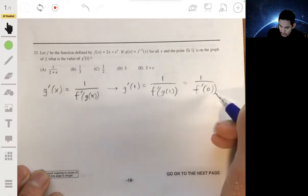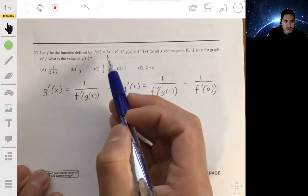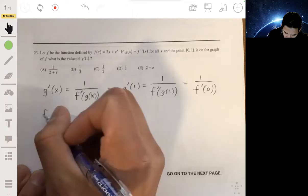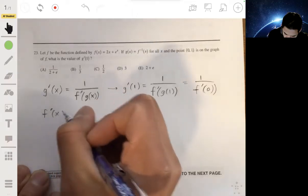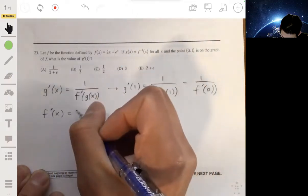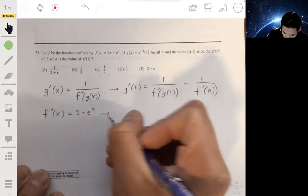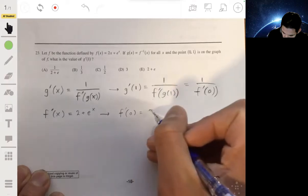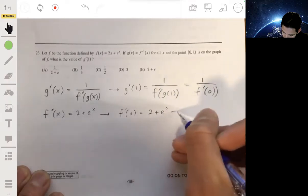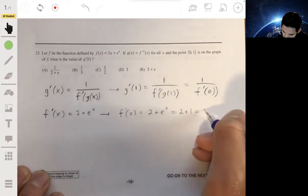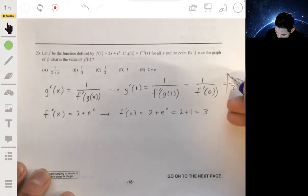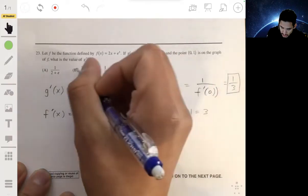So then we just have to find the derivative function of f and then plug in 0 for x. f prime of x will be 2 plus e to the x, and so f prime of 0 will be 2 plus e to the 0, which is just 2 plus 1, which is just 3. And so this will just be 1 over 3. So the answer will be B.